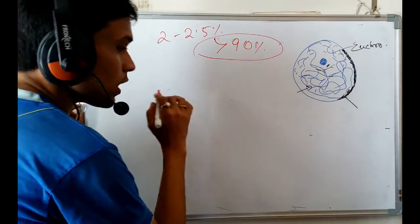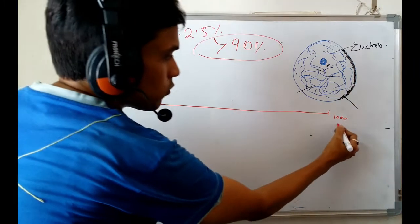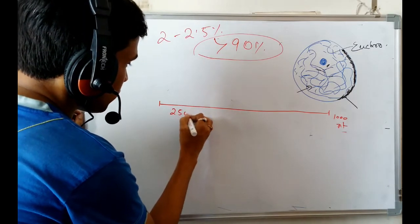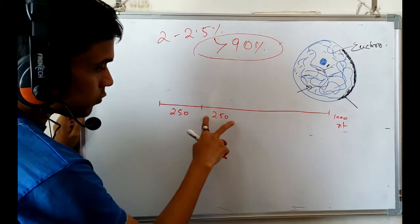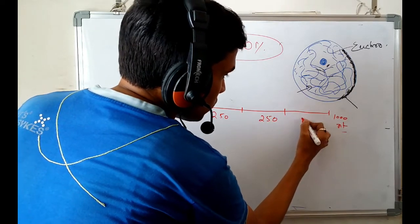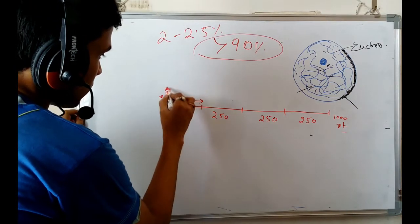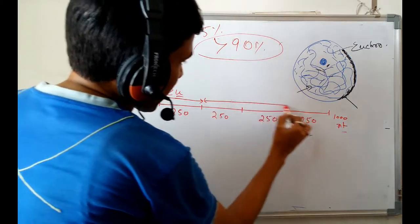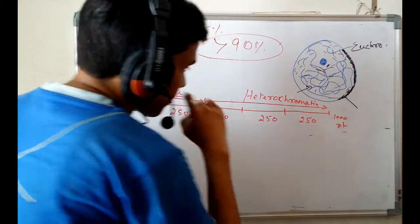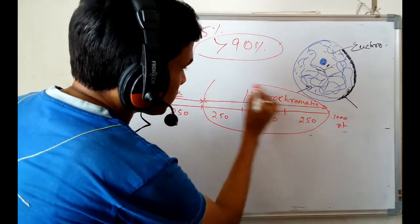Let me give you one example. Suppose this is one DNA strand of 1000 nucleotides. I am segmenting this DNA into four parts: 1 to 250, 251 to 500, 500 to 750, and 750 to 1000. Now if I say the first part is genic DNA, and from one region to another is genic DNA, more DNA is present in the heterochromatic region — that is 750 nucleotides — and only 250 nucleotides are genic DNA.